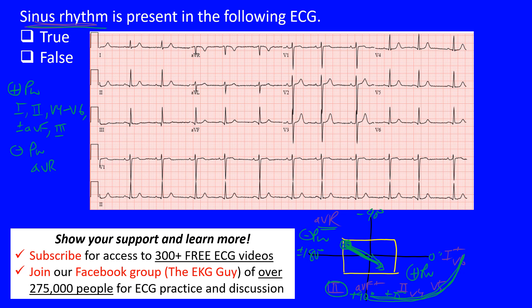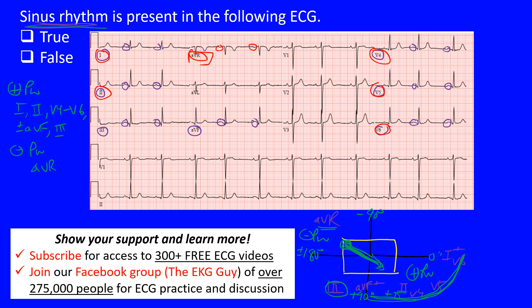Now let's look at the ECG. In lead I we can see small upright P waves — not so easy to see, but they're there. Lead II shows them more clearly. Lead III also shows upright P waves. AVF shows P waves clearly as well. In the lateral leads V4, V5, and V6, small P waves are visible, and in AVR we can clearly see the expected negative P waves.